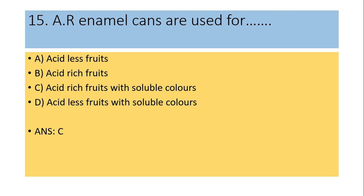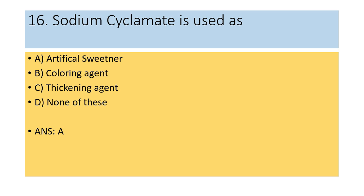Sixteenth question: Sodium cyclamate is used as an artificial sweetener, coloring agent, thickening agent, or none of these? Answer is A: artificial sweetener.